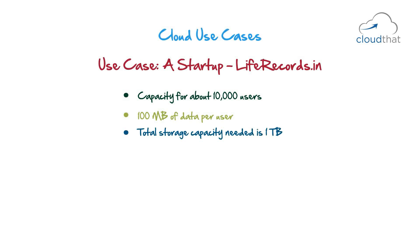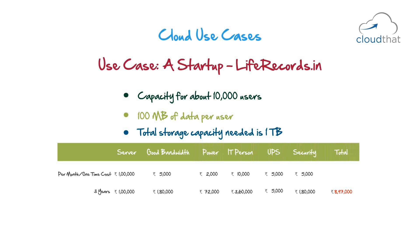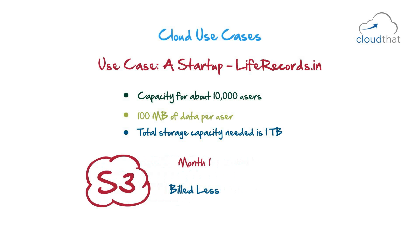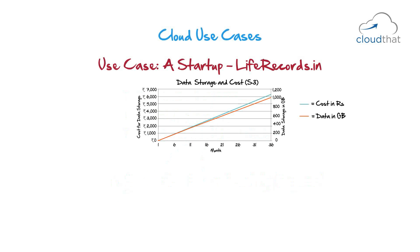Around 100 MB per user was decided, which comes to a capacity of 1 TB storage. So how much will it cost to have this storage on-premise — that is infrastructure, power, security, etc.? And you are not going to use the entire 1 TB storage from day one; it will gradually build to 1 TB in 3 years' time. Let's say we have the storage in S3 instead of a physical server. First month you are billed less, but as your application storage increases, you are billed more and more. So your 3-year cost will be the summation of the monthly payments. If you do the math, the total comes up to Rs. 150K compared to the Rs. 890K for on-premise — an 87% reduction in cost, which is phenomenal.